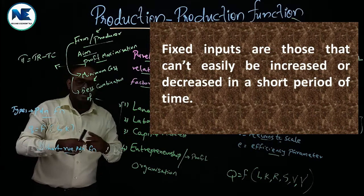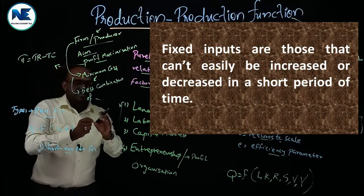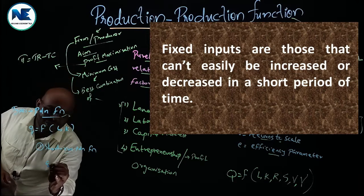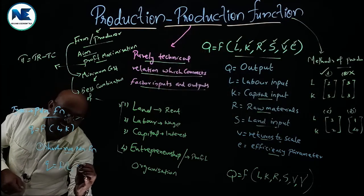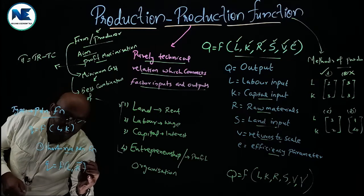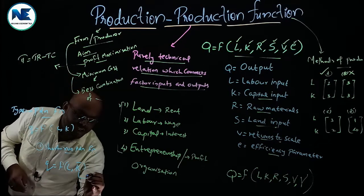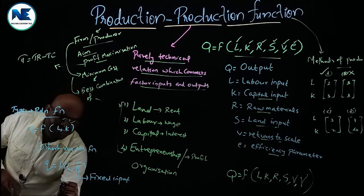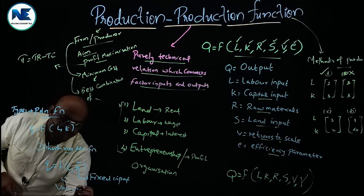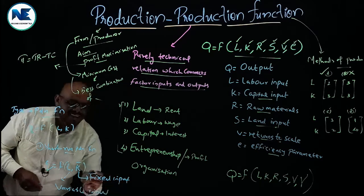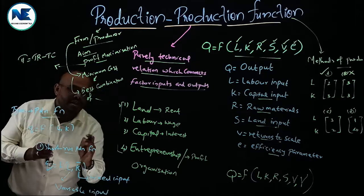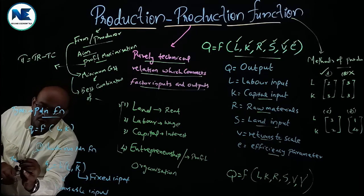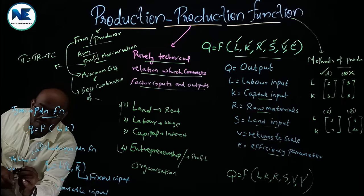In the short run, there is a distinction between variable input and fixed input. We can write: Q = f(L, K̄), where K̄ (K-bar) means capital K is a fixed input, and L (labor) is a variable input. The short-run production function is therefore related to the law of variable proportions — a very, very important topic.